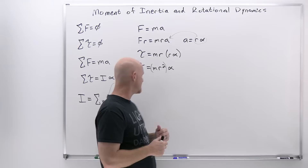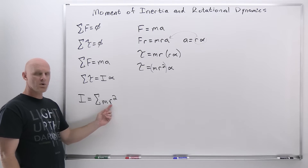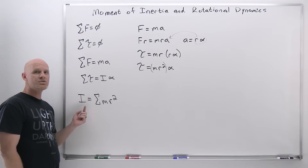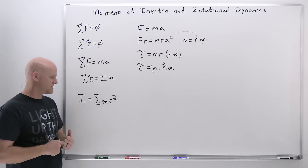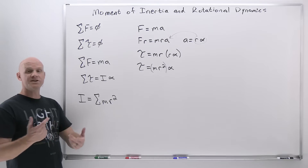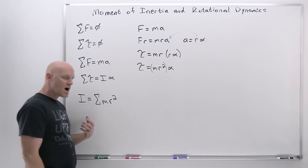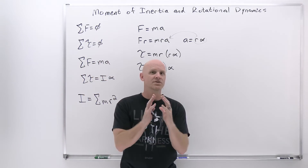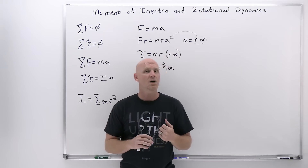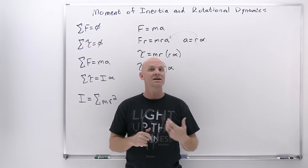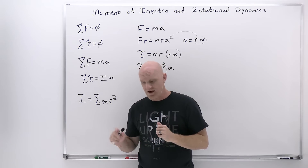One thing to keep in mind is how the distance from the axis of rotation R plays a role. The larger the distance from the axis of rotation, the larger the moment of inertia — which again is the resistance to changing its angular velocity. If an object has more of its mass concentrated towards the center where its axis of rotation is, it's going to have a lower moment of inertia. If most of its mass is concentrated further away from the axis of rotation, then it's going to have a larger moment of inertia.